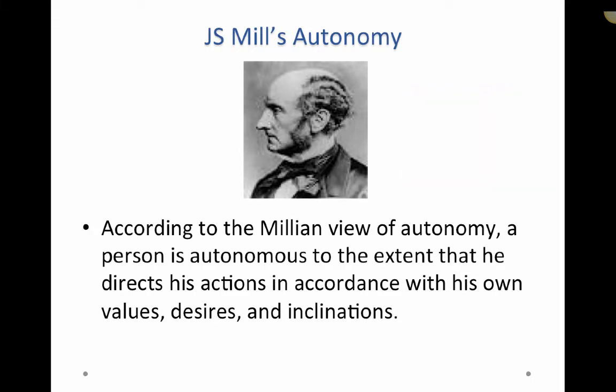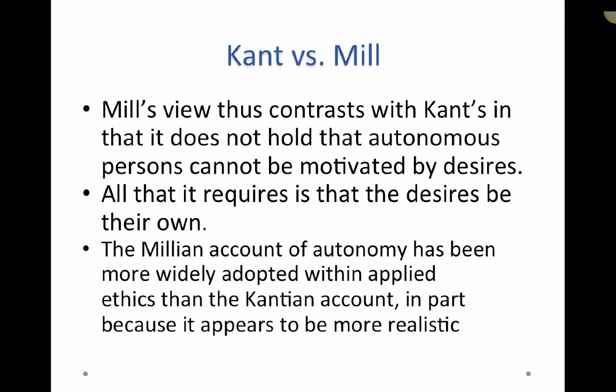According to the Millian view of autonomy, a person is autonomous to the extent that he directs his actions in accordance with his own values, desires, and inclinations. Mill's view contrasts with Kant's in that it does not hold that autonomous persons cannot be motivated by desires — all that it requires is that the desires be their own. The Millian account has been more widely accepted within applied ethics, in part because it appears to be more realistic.